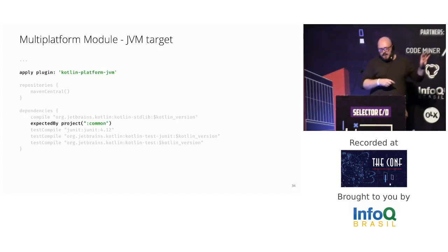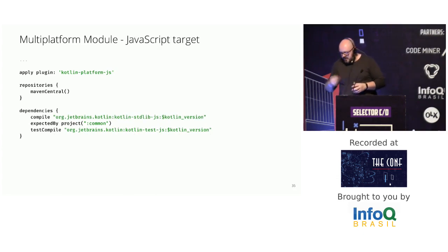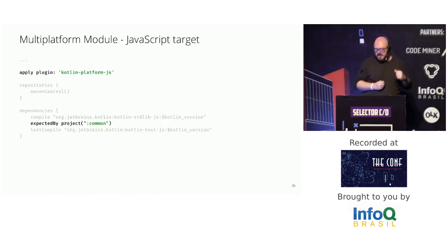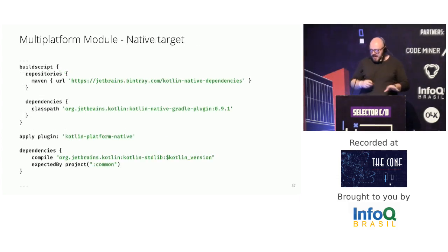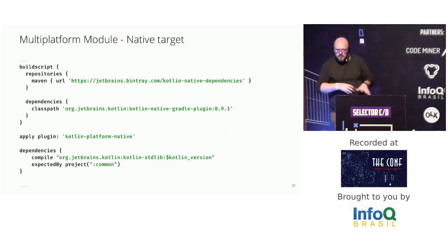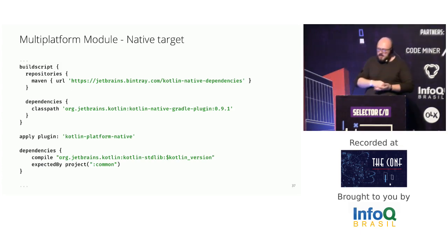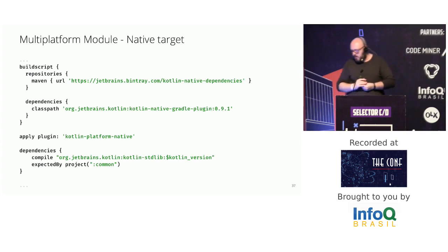If the common module delegates something to specific modules, the compiler will require you to implement it. For JavaScript it's exactly the same — kotlin-platform-js and expectedBy project common. Native is a bit trickier since it's not stable yet, and between releases things can break. I applied the plugin kotlin-platform-native and also expectedBy project common. The standard library included in native projects is the normal one without any suffix — just the Kotlin standard library.